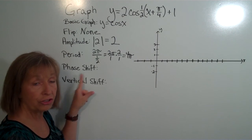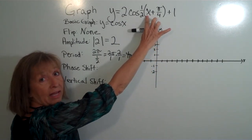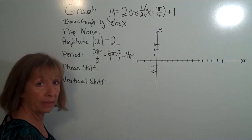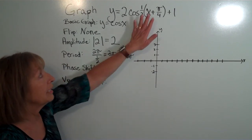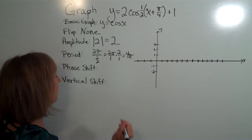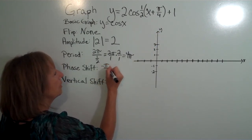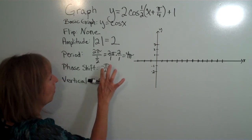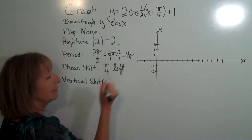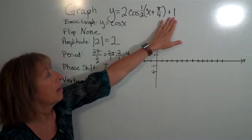For the phase shift: think about what x value plugged in would zero out the input expression. You can set that expression equal to zero and solve for x. That gives us negative π/4, so the phase shift is π/4 to the left. And the vertical shift is up 1.